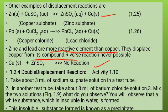Next is double displacement reaction — activity 1.2. When we mix sodium sulphate solution with barium chloride solution, we observe that a white substance which is insoluble in water is formed. This insoluble substance is known as a precipitate.